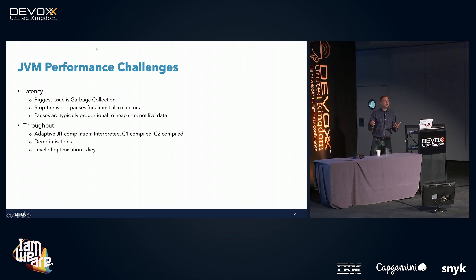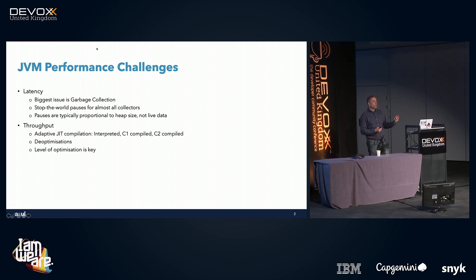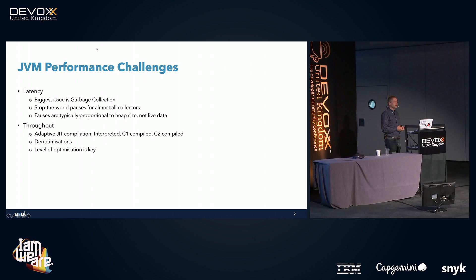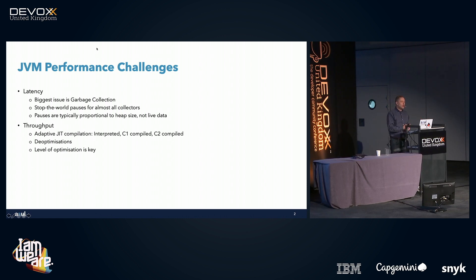The second thing is throughput — how many transactions per second can we deal with? The JVM is efficient because it uses just-in-time compilation. We look at how many times a method is called; when it's called frequently enough, we compile it into native instructions. This happens in phases: C1 compiles code very quickly without heavy optimization, then C2 optimizes more heavily based on profiling data. What we don't want to see is de-optimizations — speculative optimizations that turn out to be wrong and require throwing away and recompiling code.